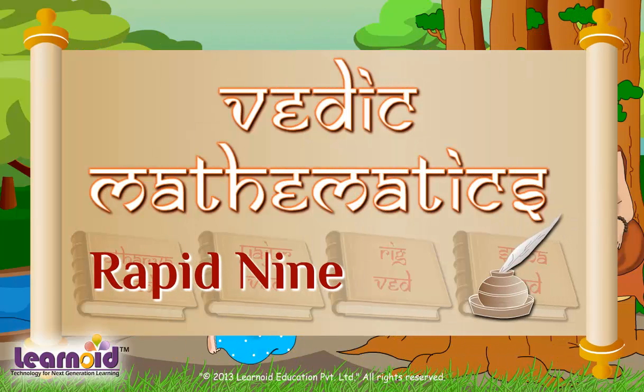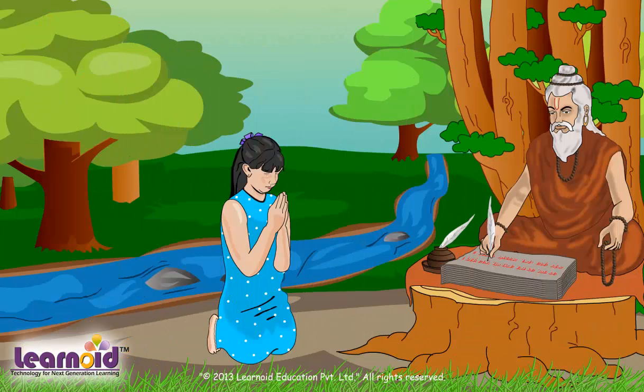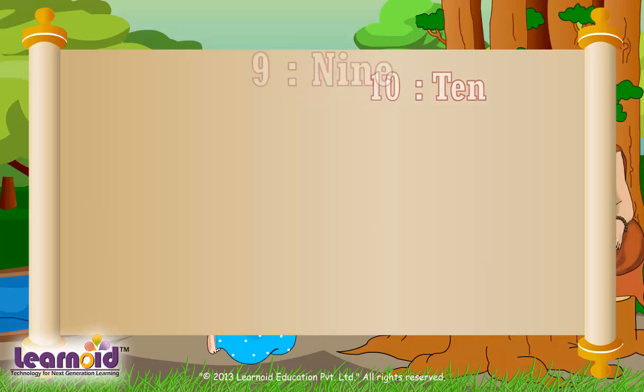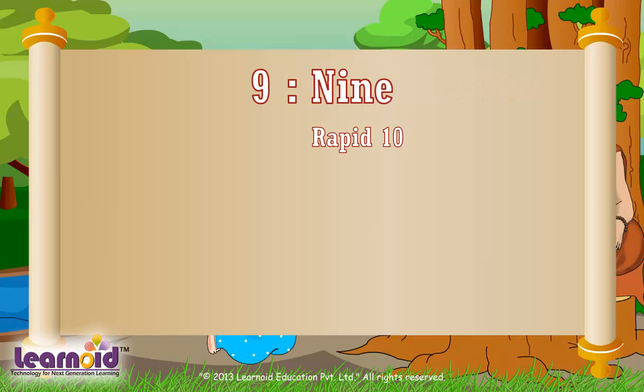Rapid 9. After Rapid 10 we will now learn Rapid 9. In Rapid 9 we will find another number to make 9. To find Rapid 9 of a number, first find Rapid 10 of the number and then subtract 1.